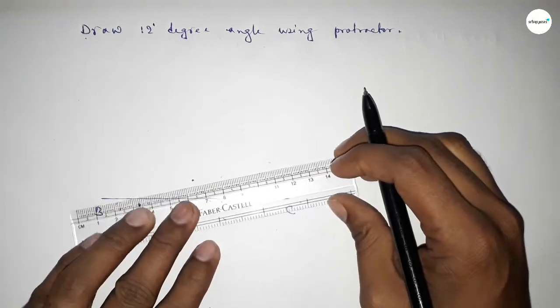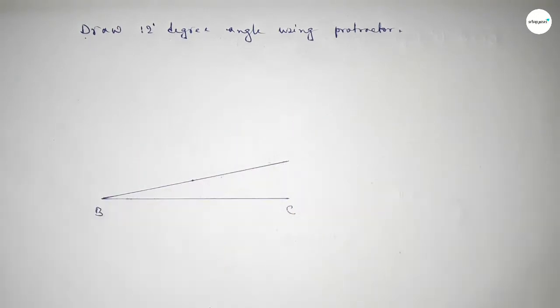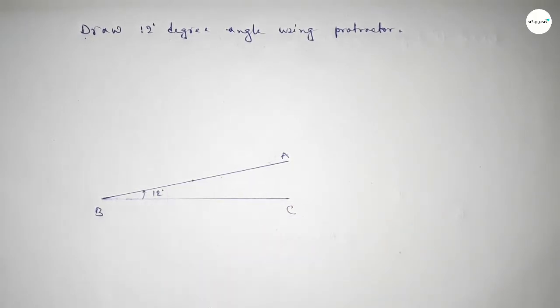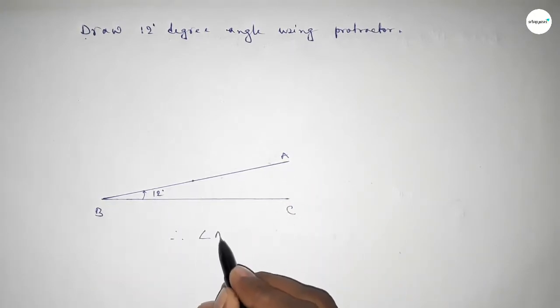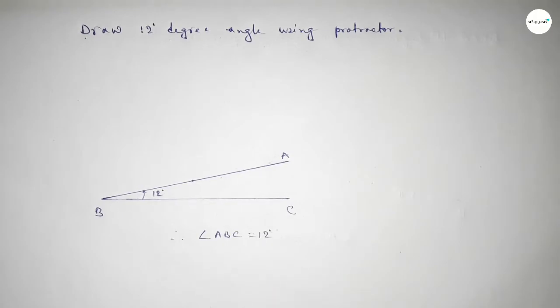Now joining this to get the 12-degree angle. So taking here point A, angle ABC is 12 degrees. Therefore, angle ABC equals 12-degree angle.